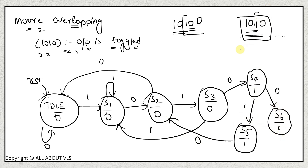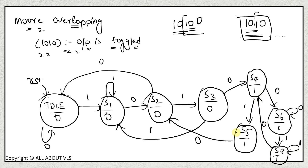In S6, you have sequence ending in triple-0; on 1 go to S7 with output 1. On 0 in S7 go to S4. On 1 in S5 (sequence 1-0-1), you can reutilize that single 1, so go to S7 with output 1. This completes the Moore overlapping FSM for the 1010 sequence with toggling output.